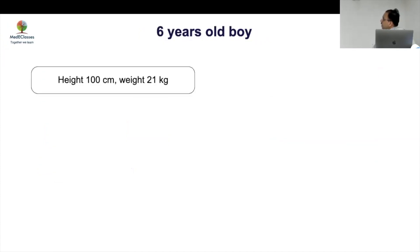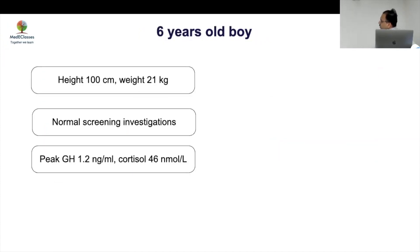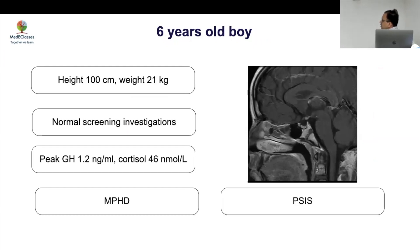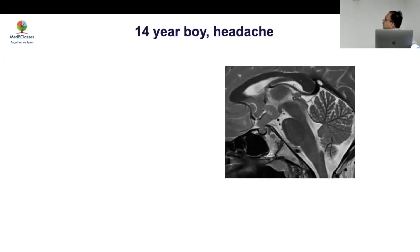Case 5: A 6-year-old boy with height 100 cm, weight 21 kg, low growth hormone, low cortisol — multiple pituitary hormone deficiency. MRI shows a discrepancy between the anterior and posterior pituitary, consistent with pituitary stalk interruption syndrome, because the anterior pituitary did not migrate up. This is an early abnormality in terms of growth.